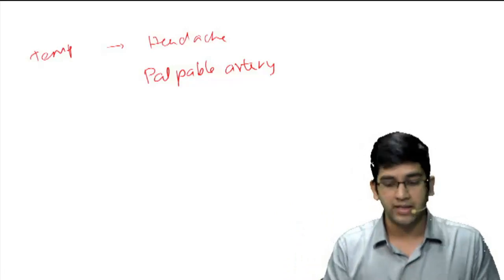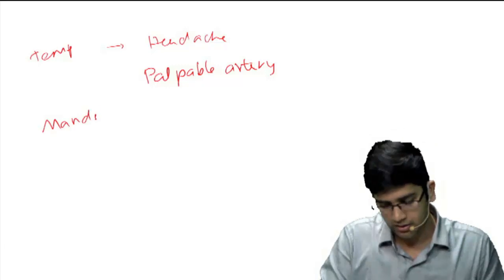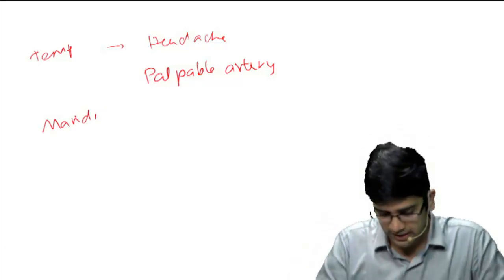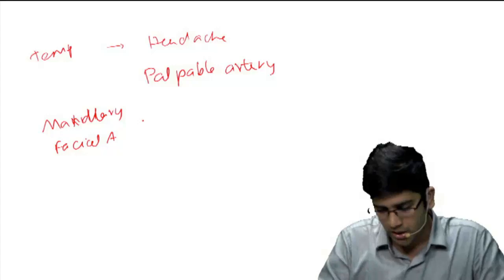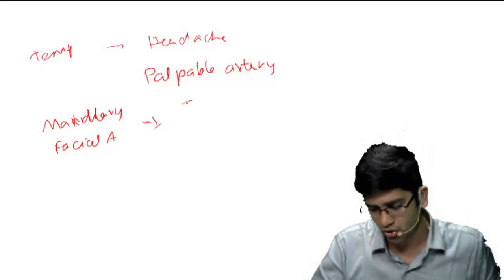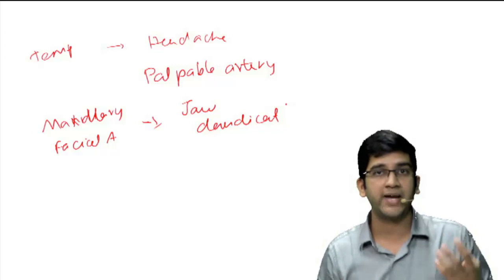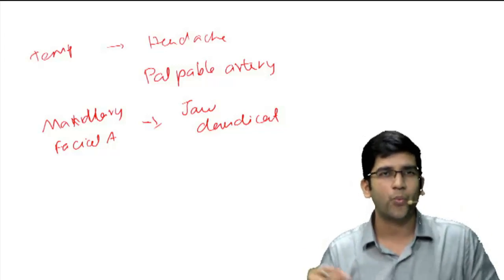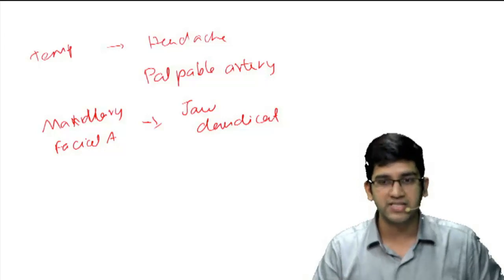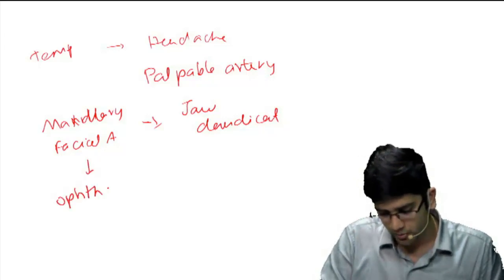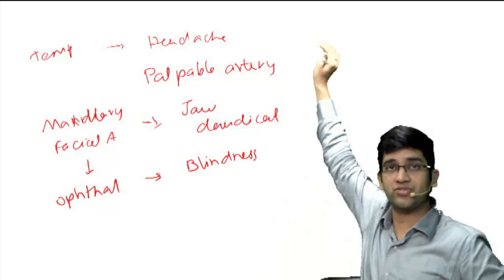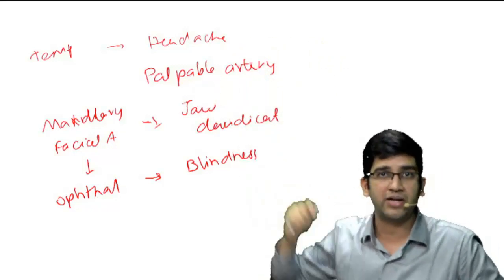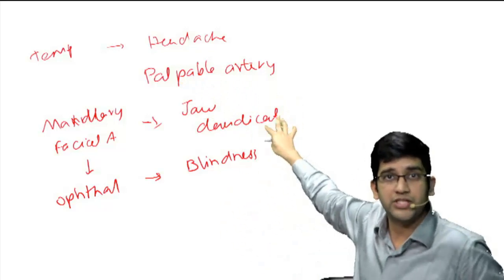If not caught early, it will spread to the maxillary and facial arteries. When it involves your maxillary and facial arteries, the patient is going to have jaw claudication — that's also a classical finding given in the question: pain on chewing, pain on swallowing, pain on speaking. Very specific for temporal arteritis. If you miss that, it's going to go to the ophthalmic artery, causing permanent blindness. You have to diagnose it early — at the stage of the palpable artery — and not let it reach that point.